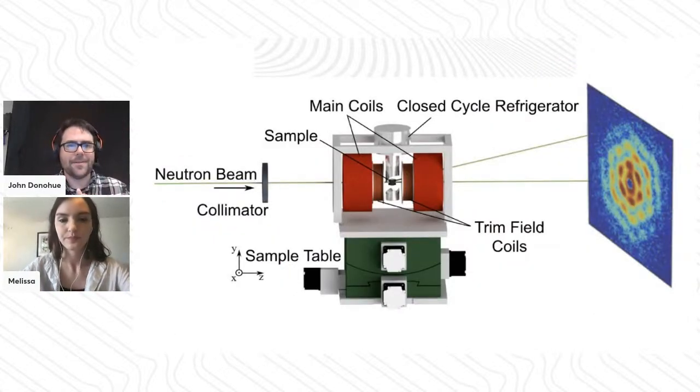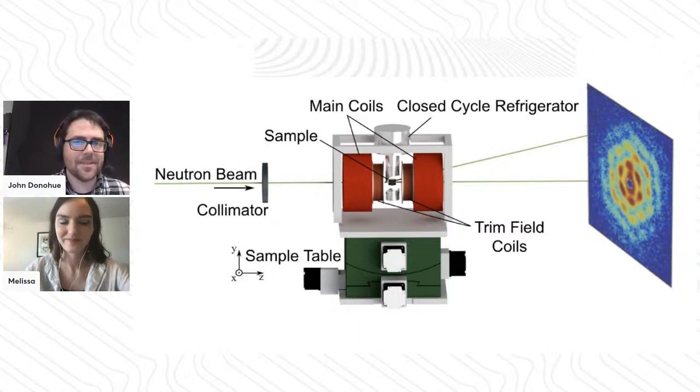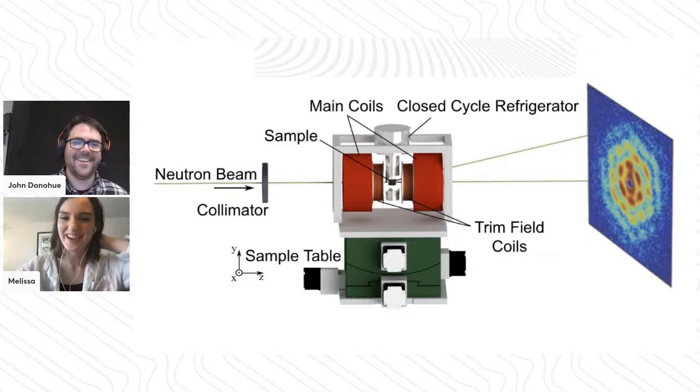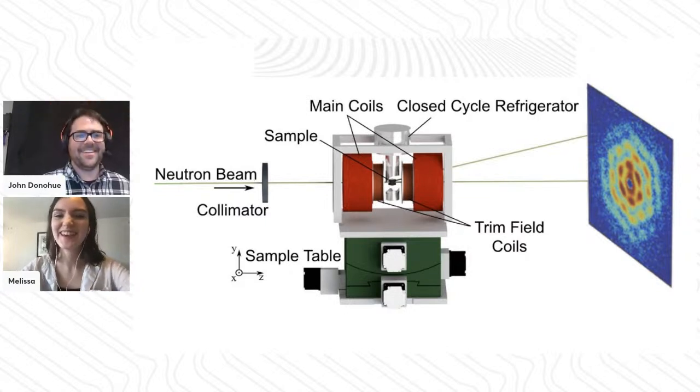I have an image of a simplified version of your experiment in this particular result, where you're sending the neutron beam through the sample, imaging the Fourier transform effectively of that skyrmionic structure. Of course, this isn't as simple as it is in the real world. Are there any difficult things about generating a neutron beam or detecting a neutron beam?